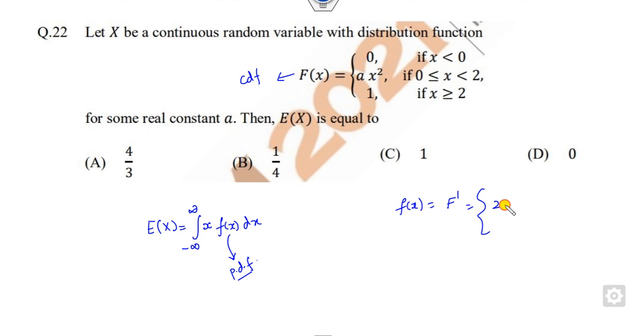So the domain is 0 to 2. If you substitute here, domain is 0 to 2, x into f(x), that is nothing but 2ax squared. So what is the answer? This is 2a outside, this is x cubed by 3 from 0 to 2.